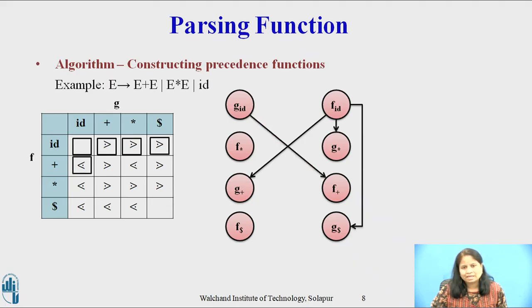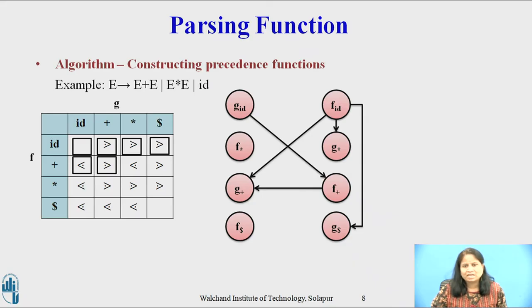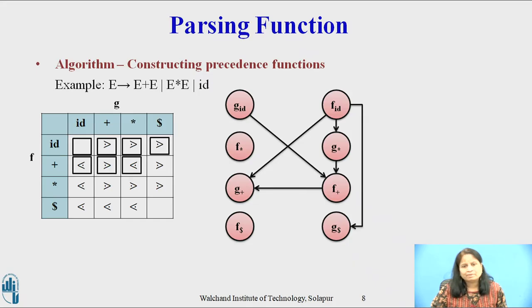Now consider the second row of the operator precedence table. The relation between f(plus) and g(id) is yields-precedence-to, so there will be an arc from g(id) to f(plus). The relation between f(plus) and g(plus) is takes-precedence-over, so there will be an arc from f(plus) to g(plus). The relation between f(plus) and g(star) is yields-precedence-to, so there will be an arc from g(star) to f(plus). The relation between f(plus) and g(dollar) is takes-precedence-over, so there will be an arc from f(plus) to g(dollar).